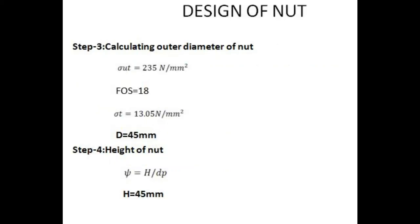Design of nut Step 3: Calculating outer diameter of nut. Here ultimate strength equals 235 N per mm square and factor of safety equals 18. Therefore sigma T equals 13.05 N per mm square, and the diameter is coming out to be 45 mm.